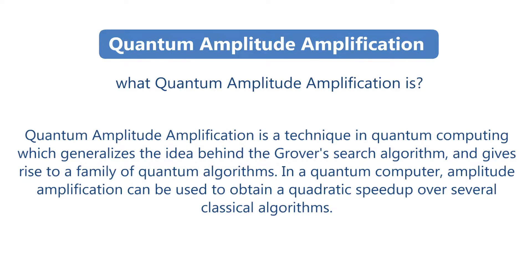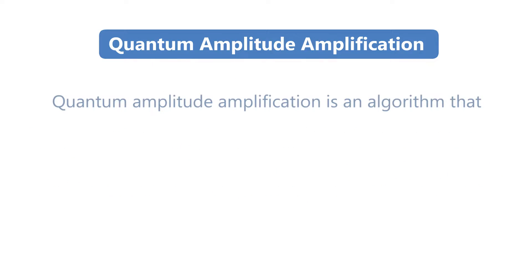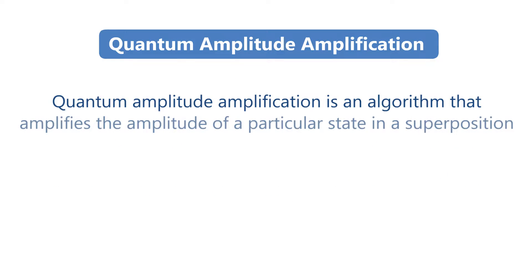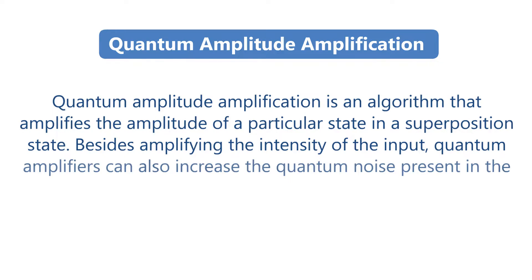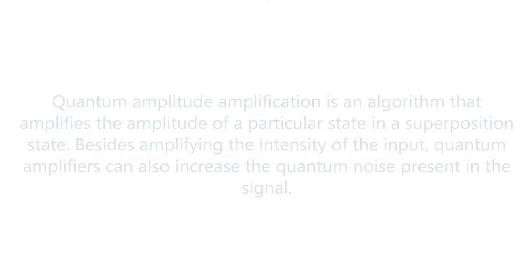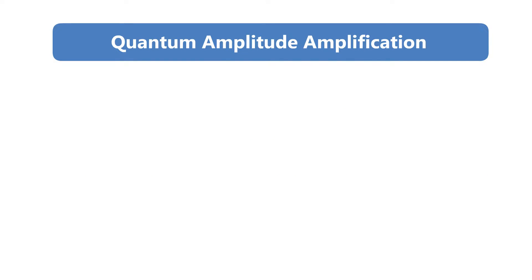Quantum amplitude amplification is an algorithm that amplifies the amplitude of a particular state in a superposition state. Besides amplifying the intensity of the input, quantum amplifiers can also increase the quantum noise present in the signal. So now let us go on with explanation of algorithm amplitude amplification.